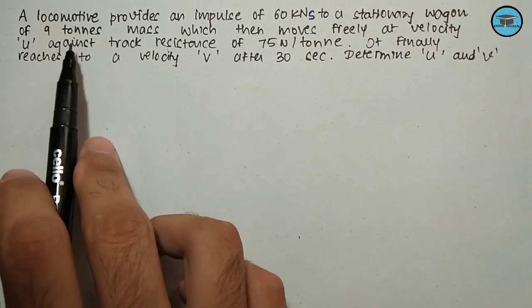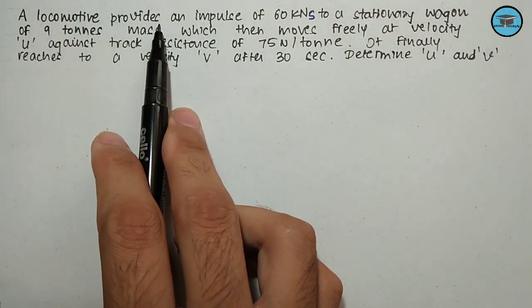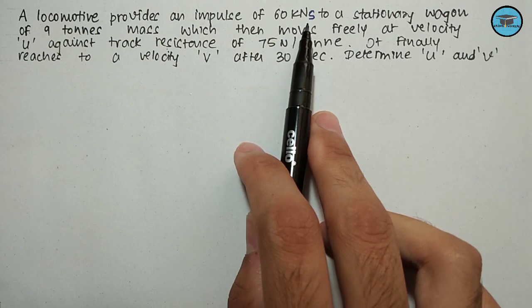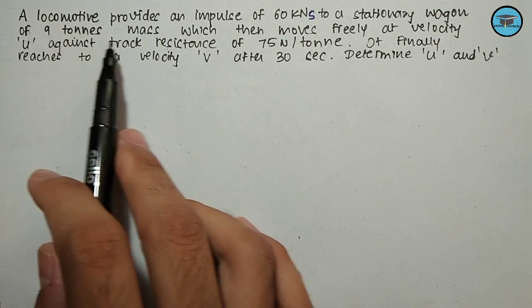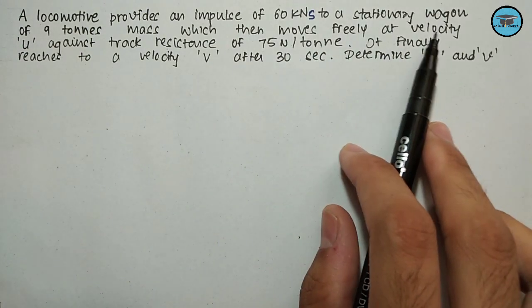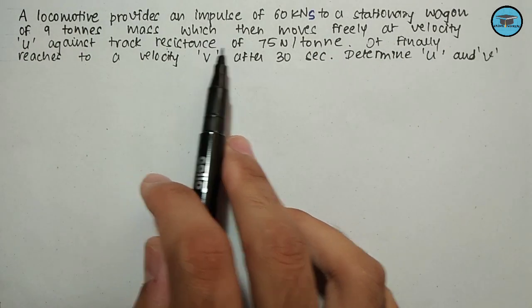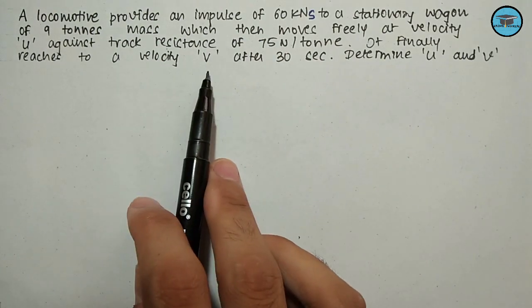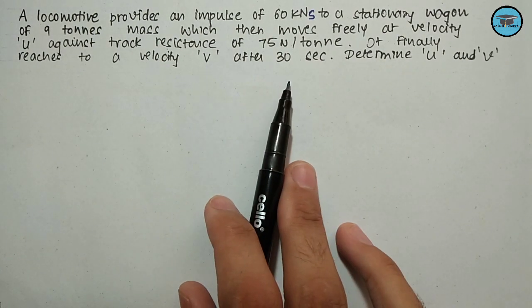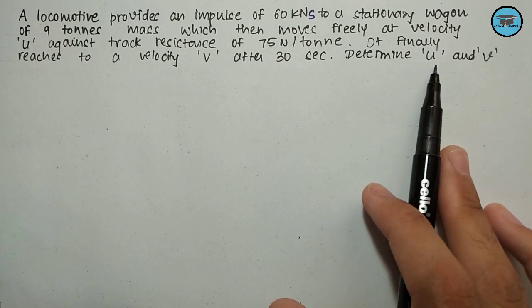It consists of a locomotive which provides an impulse of 60 kilonewton-second to a stationary wagon having a mass of 9 tons, which then moves freely at a velocity U against a track resistance of 75 Newton per ton, and finally reaches velocity V after 30 seconds. We need to determine the value of U as well as V.